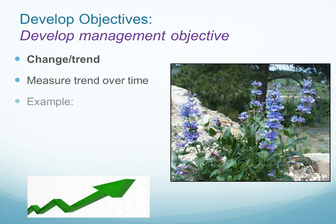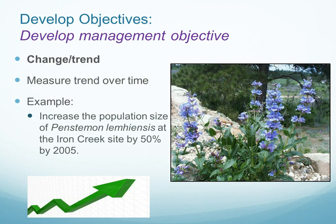When developing management objectives, there are two main types. The first is the change-trend type of objective, in which we are interested in measuring a trend over time. An example would be a management objective stating that we want to increase the population size of Penstemon lemmiensiensis at the Iron Creek site by 50% by a specified time, in this case 2005.